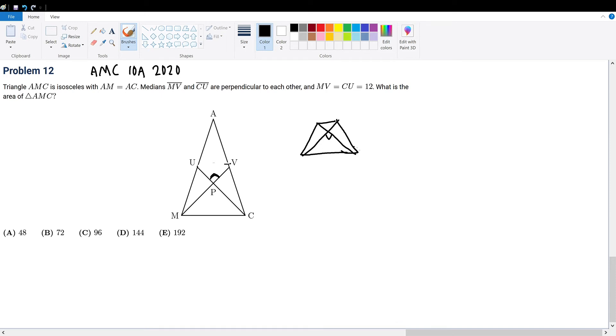If I call the orthogonal diagonals d₁ and d₂, the area of this trapezoid will be d₁ times d₂ over 2. This is an area formula that exists for trapezoids.